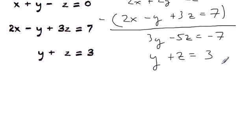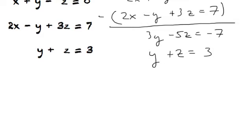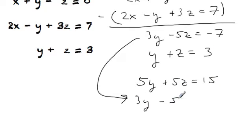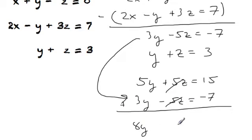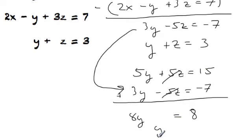And then we also have y plus z equals three. I'm going to get rid of z's in this equation. So I'm going to take this one and multiply it by five. I get 5y plus 5z equals 15. Now I'm going to bring this equation down here and add these two equations. We're going to get that 8y equals eight, which means that y equals one.